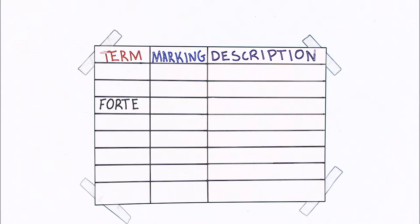Dynamic markings in music. Let's start things off with Forte. Forte is represented by the symbol F and means play loudly.